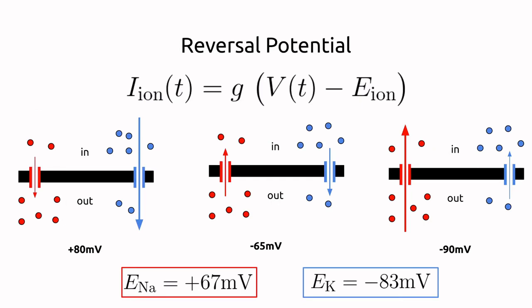The ion pumps in the cell wall work to maintain a specific ratio of ions inside to outside for each type of ion. Consequently, each ion in the neuron — like sodium, potassium, calcium, and chloride — has a steady-state ion concentration difference, and hence an associated delta V given by the Nernst potential equation. This potential is called the reversal potential, and in a single-ion system, the equilibrium potential and the reversal potential would be identical. However, when there is more than one ion type in the cell, the reversal potential is a term specific to the ion, and the equilibrium potential is the steady-state potential of the neuron in its entirety, or the membrane potential.